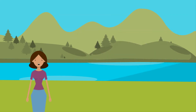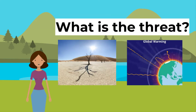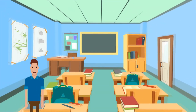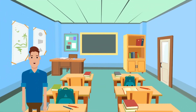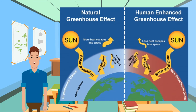Moving on from local effects, let's look at the global impacts of pollution. What is the enhanced greenhouse effect, which is leading to global warming? The enhanced greenhouse effect — sometimes referred to as climate change or global warming — is the impact on the climate from the additional heat retained due to increased amounts of carbon dioxide and other greenhouse gases that humans have released into the Earth's atmosphere since the Industrial Revolution.